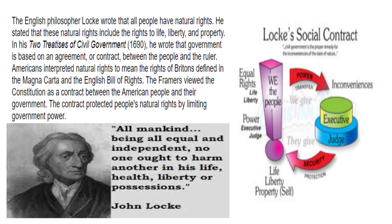The English philosopher Locke wrote that all people have natural rights — the rights of life, liberty, and property. In his Two Treatises of Civil Government (1690), he wrote that government is based on an agreement or contract between the people and the ruler. Americans interpreted natural rights to mean the rights of Britons defined in the Magna Carta and the English Bill of Rights. The framers viewed the Constitution as a contract between the American people and their government that protected people's natural rights by limiting government power.